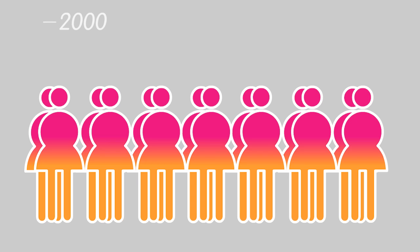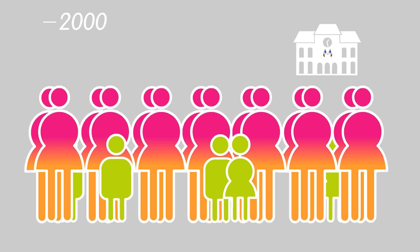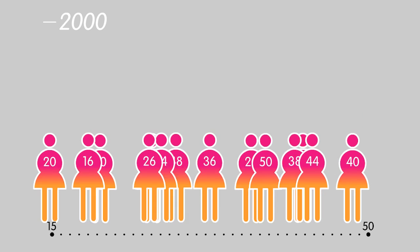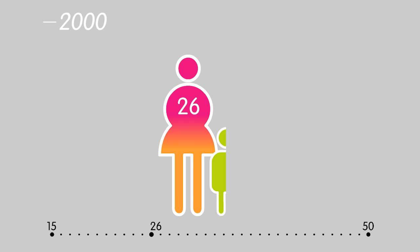Let's look at the case of the year 2000. Some of the women aged 15 to 50 had children during the year. We know how many through birth registrations, and we know how old the mothers were. Demographers can thus put the births into age brackets. For example, 51,743 children were born in 2000 to women aged 26.